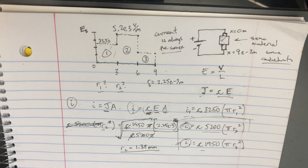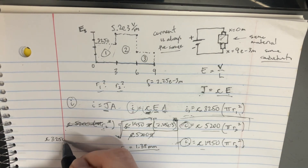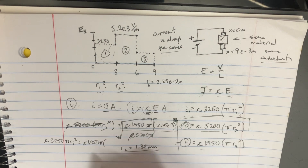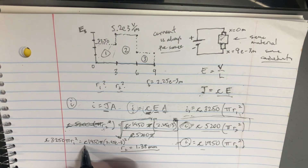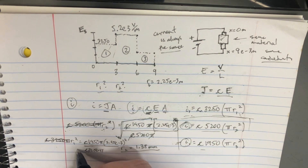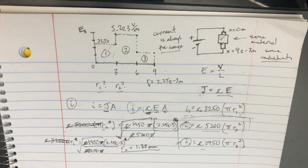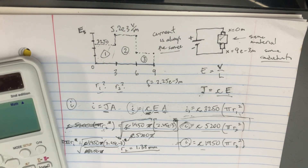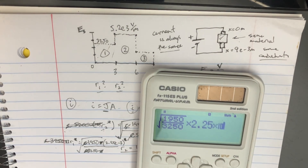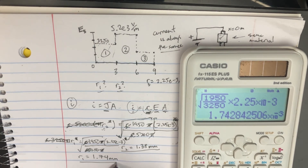We repeat the same process for r₁, setting the zone 1 and zone 3 expressions equal: σ·3250·πr₁² = σ·1950·π·(2.25×10⁻³)². Dividing by conductivity and 3250π, then square-rooting and canceling constants, we get r₁ = √(1950/3250) × 2.25×10⁻³, which equals 1.74 millimeters.